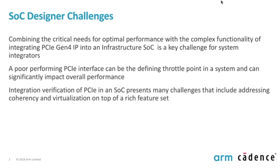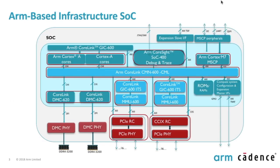These challenges require not just an IP-based solution but an overall system-based solution where cross-dependencies between the various IPs in the SOC matter. A typical ARM-based infrastructure SOC features clusters of Cortex-A ARM cores attached to the system fabric using a mesh-based fabric — ARM's CoreLink CMN-600. Interrupts are controlled by ARM GIC-600 IP, and the MMU-600 IP provides I/O virtualization capabilities for the PCIe complex. In addition, there are memory controllers talking to DDR, plus debug and boot functionalities.